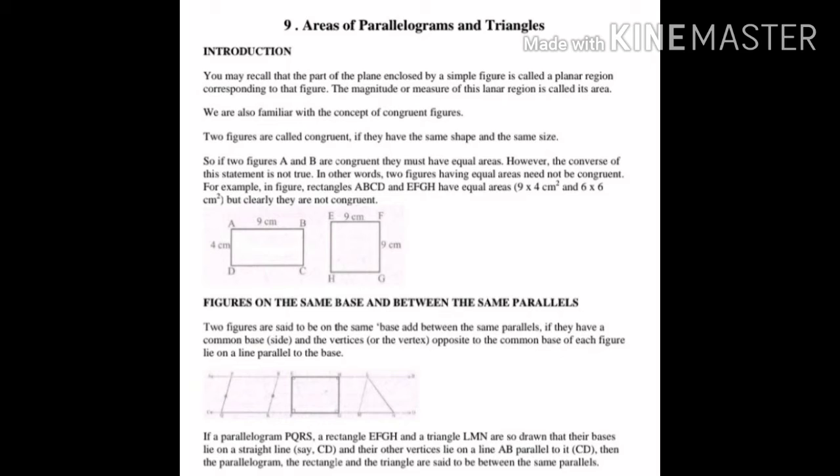Two figures are said to be on the same base and between the same parallels if they have a common base (that is, a common side) and the vertices opposite to the common base of each figure lie on a line parallel to the base. For example, parallelogram PQRS, rectangle EFGH, and triangle LMN are drawn so that their bases lie on a straight line CD and their other vertices lie on line AB parallel to CD.